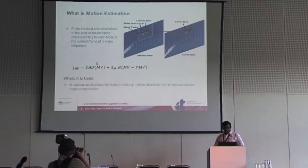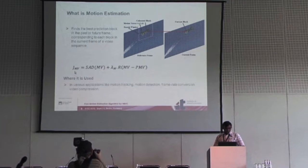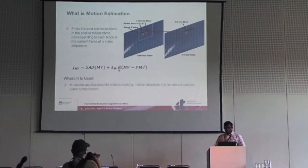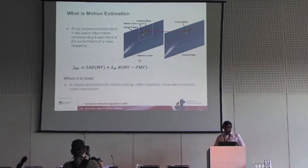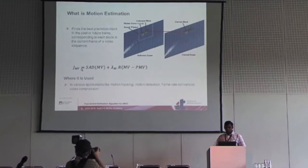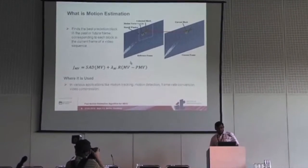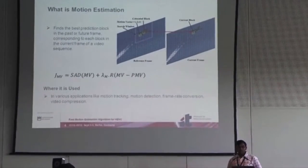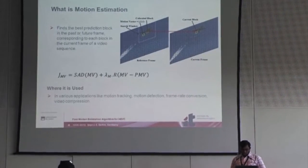Motion estimation is done based on a cost equation where J is the Lagrangian cost of the motion vector, SAD is the distortion (sum of absolute difference), lambda is the Lagrangian multiplier, and R is the bit rate required for the motion vector difference. The goal is to find the block with least cost, optimizing between distortion and bit rate. Motion estimation is also used in applications like motion tracking, motion detection, frame rate conversion, and video compression.